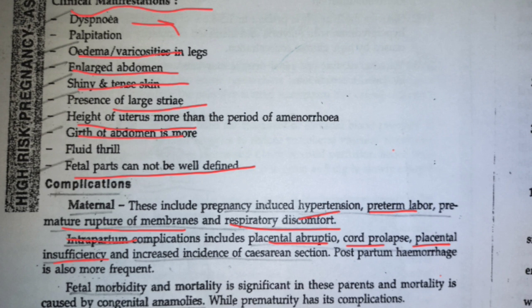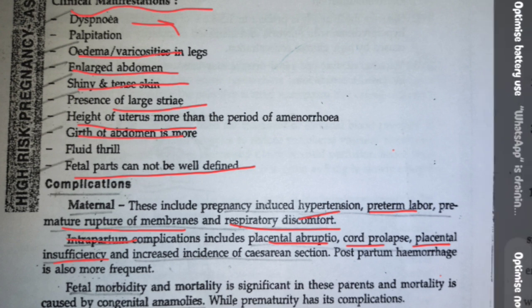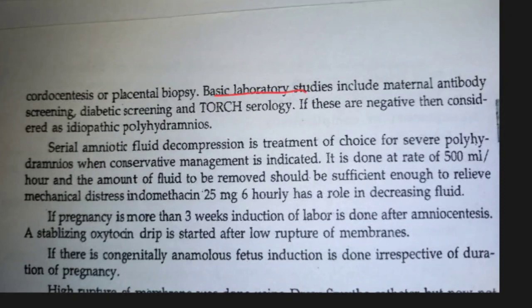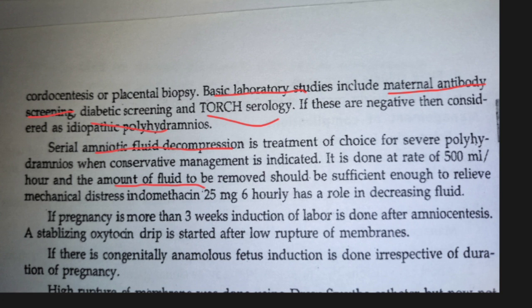After birth, there is a chance of fetal congenital abnormalities. Diagnosis: maternal antibody screening, diabetic screening, TORCH serology. If everything is negative but polyhydramnios persists, the cause may not be known and treatment begins. Treatment: amniotic fluid decompression — remove excess amniotic fluid. At delivery, aim for normal delivery; if complications arise, proceed to C-section.